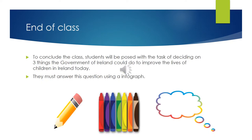To conclude the lesson, students will be posed with the question: what could the Irish government do to improve the lives of children in Ireland today, and they must list three things or steps. However, there is a slight twist — students are required to answer this through an infograph. This means they can use pictures, diagrams, labels, or even speech bubbles to answer the question.